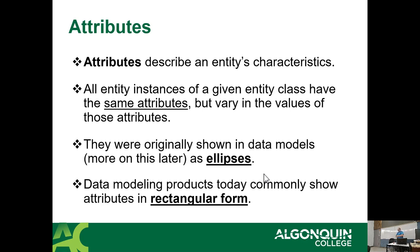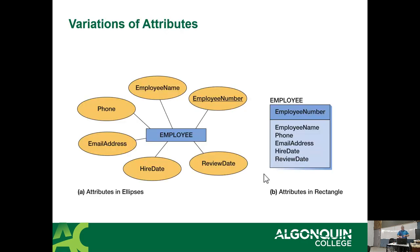There are two different versions of conceptual diagrams. Attributes were historically shown as ellipses, and nowadays they use more of a rectangular form. The one on the left is the traditional one that's been around since the 1970s. The one on the right is one that's become more popular in the last 15 to 20 years. They do the exact same thing — there is no difference between them except in how they appear.